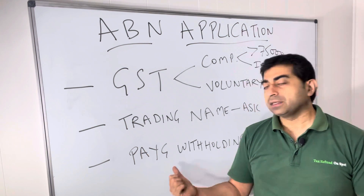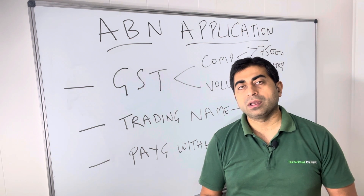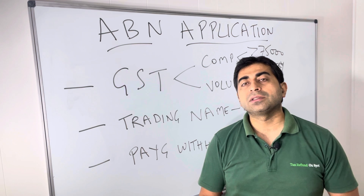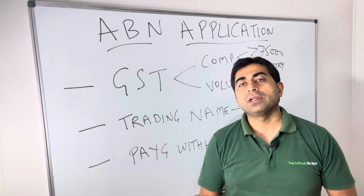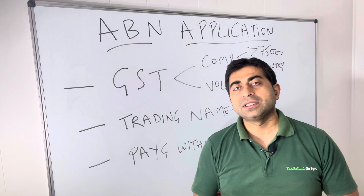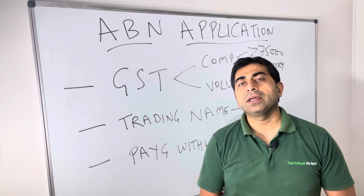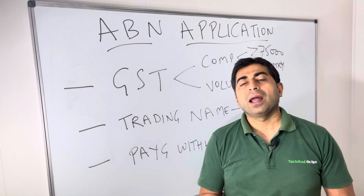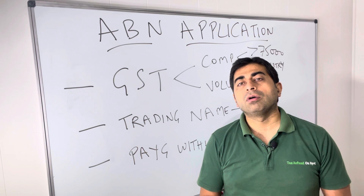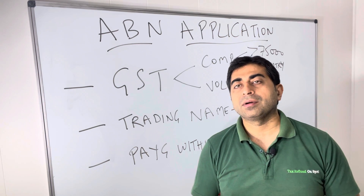The third option is PAYG withholding. PAYG withholding means when you want to hire an employee, you must register for it, as it allows you to withhold tax from their salary. This is mandatory only if you want to hire employees. In that option, it will ask you how many expected employees you have — just put an approximate number — and how much tax you will withhold.